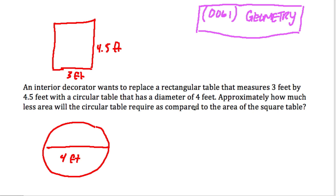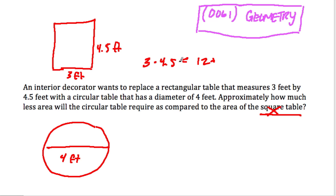So let's figure this out. The question says 'square table' but it's actually a rectangular table, so be careful with that. We have a rectangular table which is 3 by 4.5. To work that out: 3 times 4 is 12, plus 3 times one-half is 1.5, so that's 13 and a half. That's the area of the rectangular table.